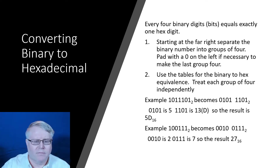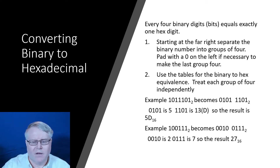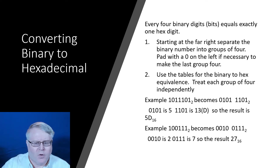For example, 101101 becomes two groups with a zero added on the far left. The first group 0101 is 5, and 1101 is 13, which is D — giving hex 5D. In the second example there are six bits, so we add two zeros on the far left to make the length eight: 0010 is 2, 0111 is 7, giving us 27 base 16. Remember it's 'two seven,' not twenty-seven. Always start grouping from the right and pad on the left, or you'll get the wrong answer.